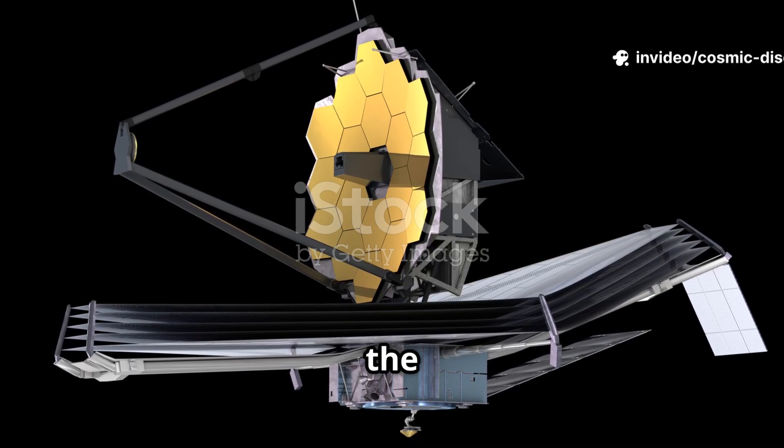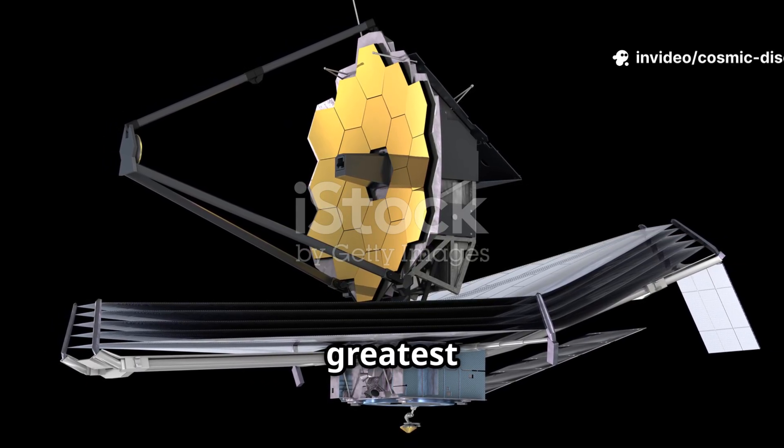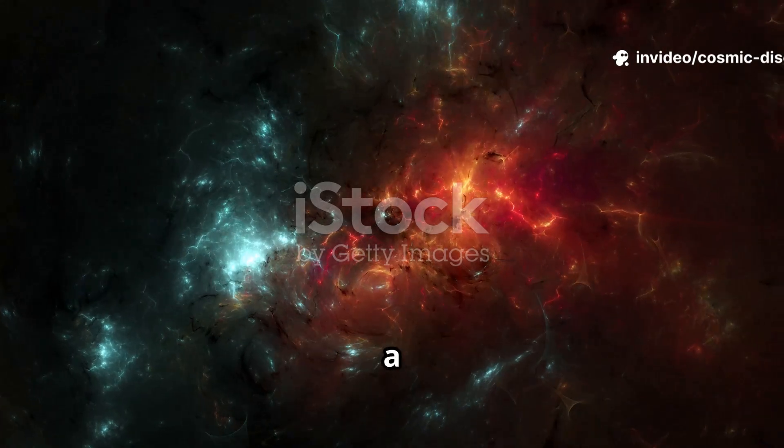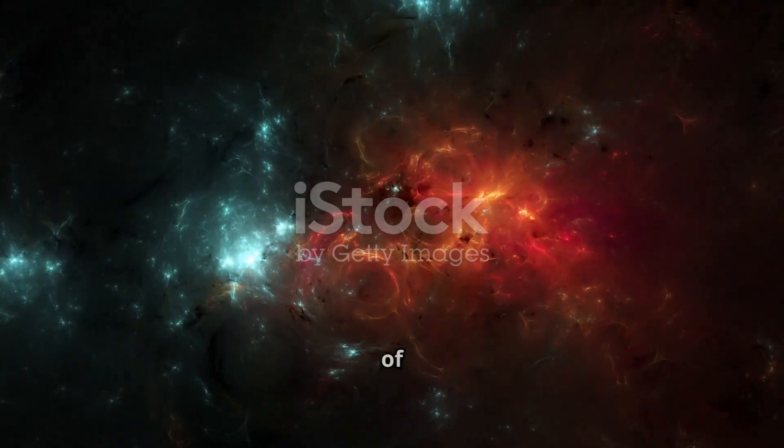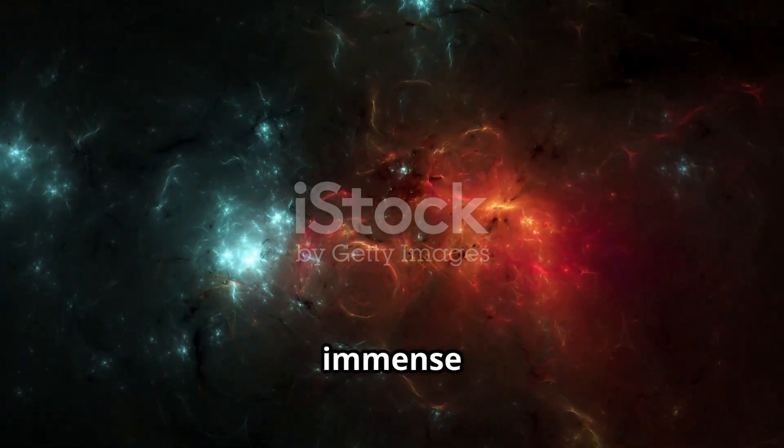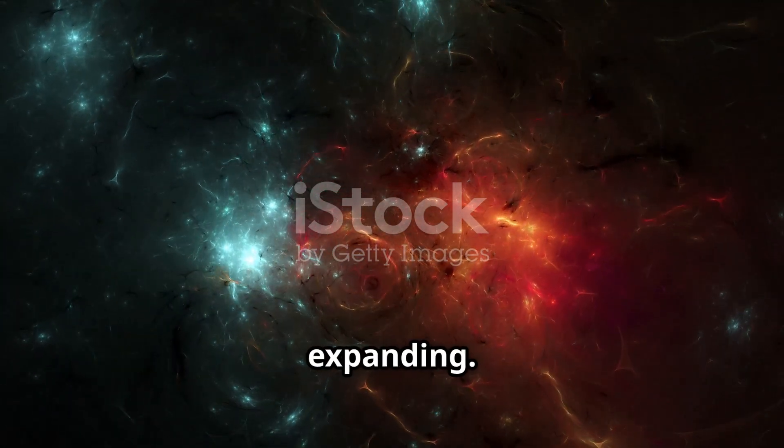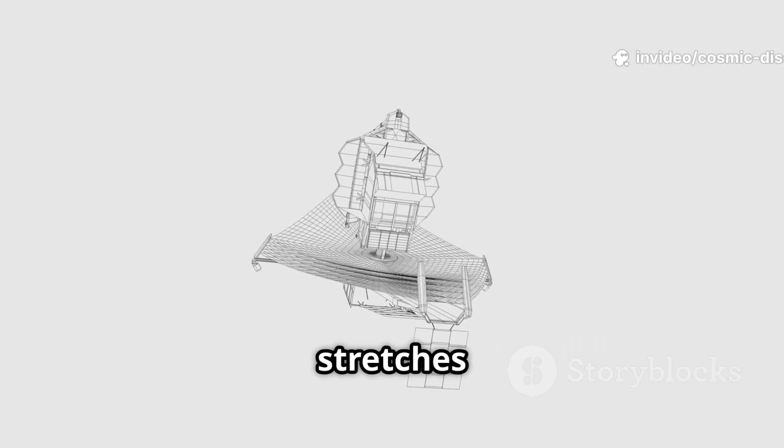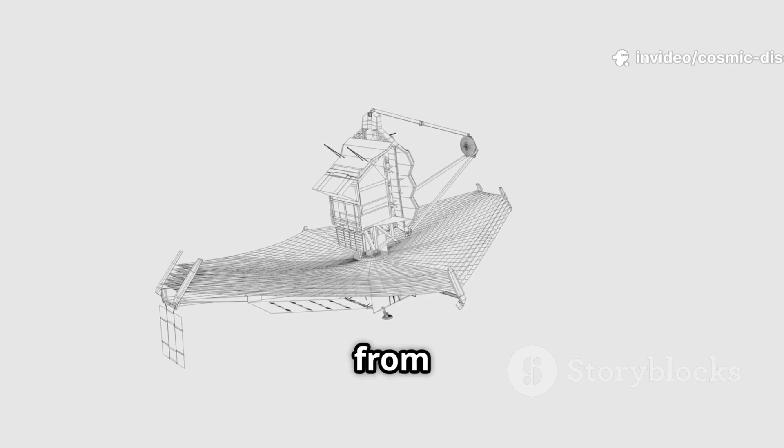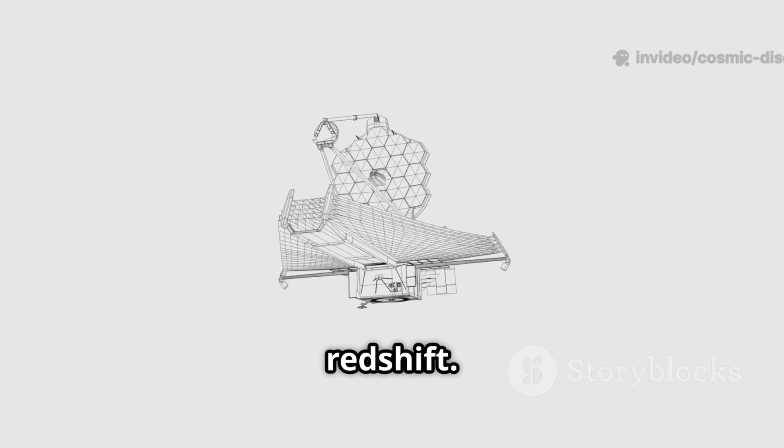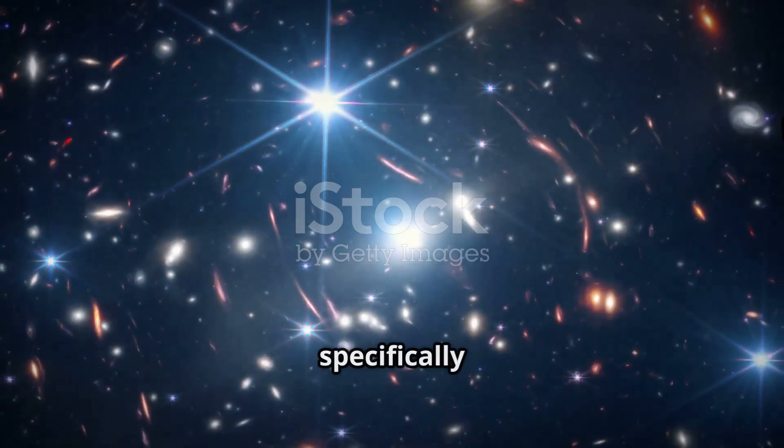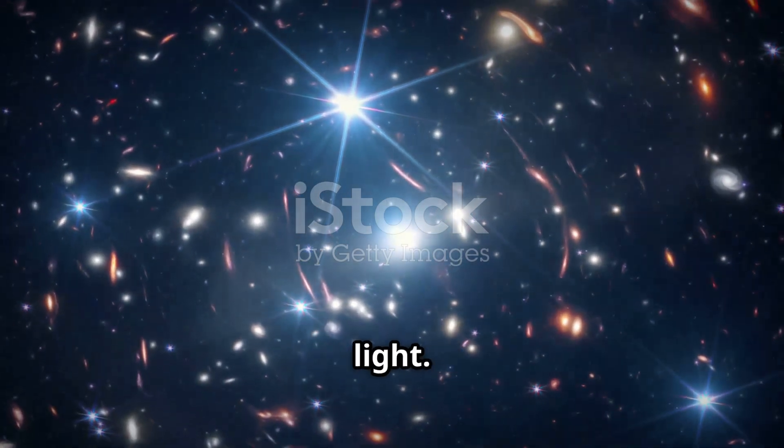Its ability to see in the infrared spectrum is its greatest asset. When we look at a distant galaxy, the light from its stars has been traveling for billions of years. During this immense journey, the universe itself has been expanding. This expansion stretches the light waves, shifting them from visible light into longer infrared wavelengths. This is a phenomenon known as redshift. Webb's instruments are specifically tuned to capture this stretched light.